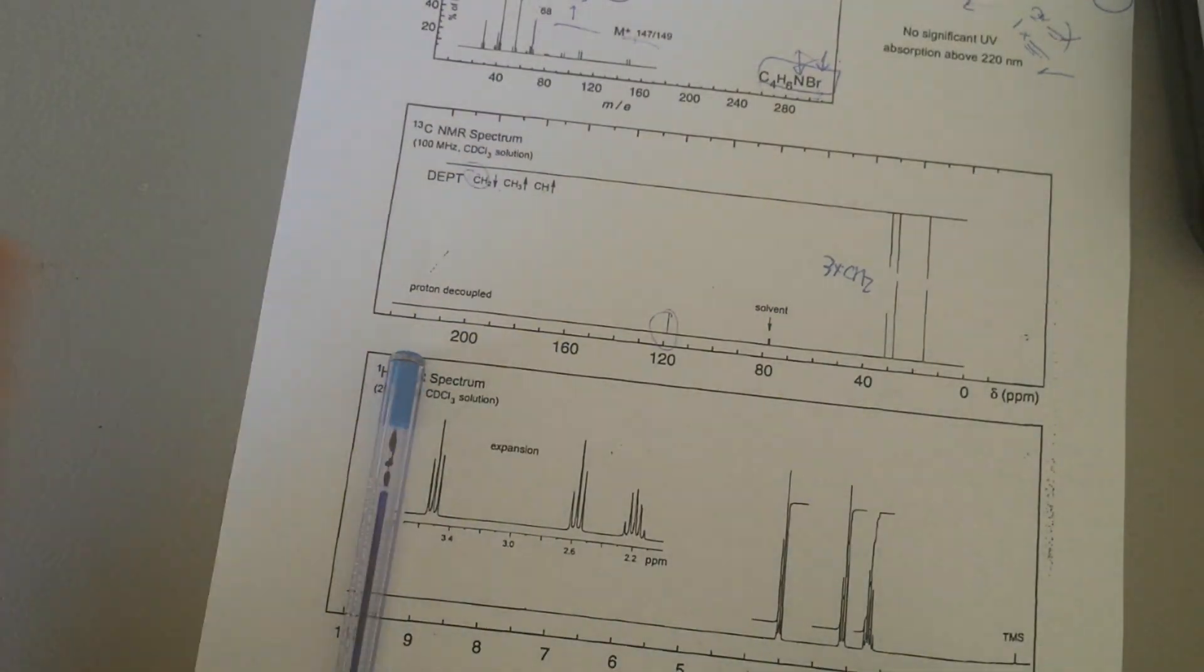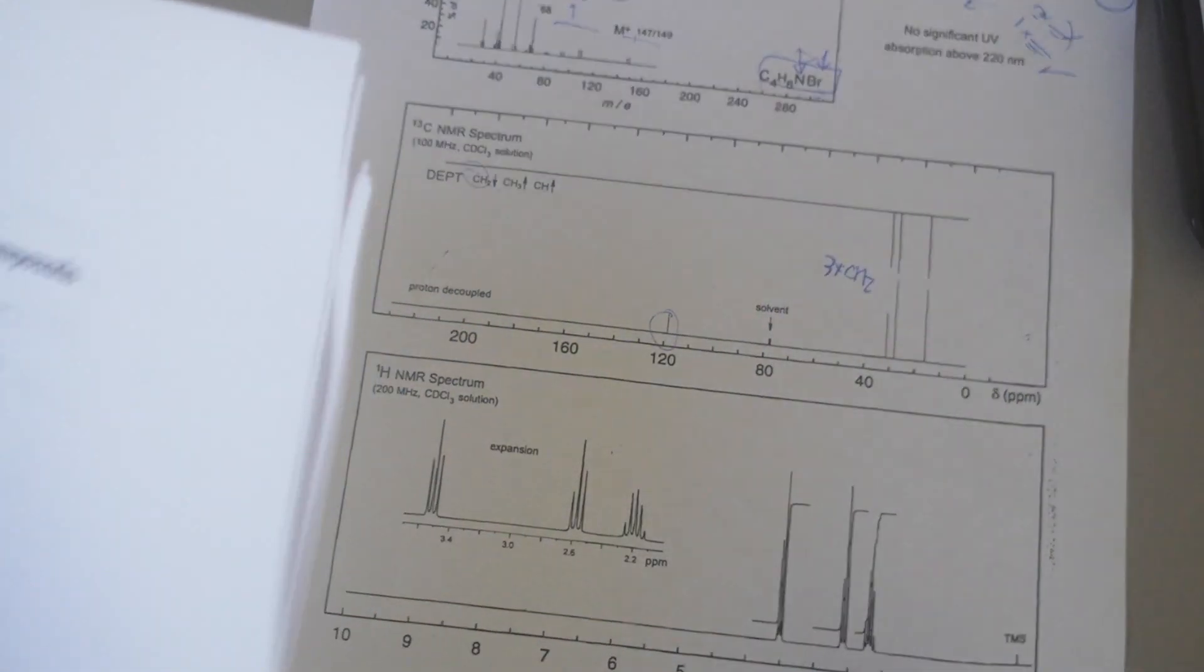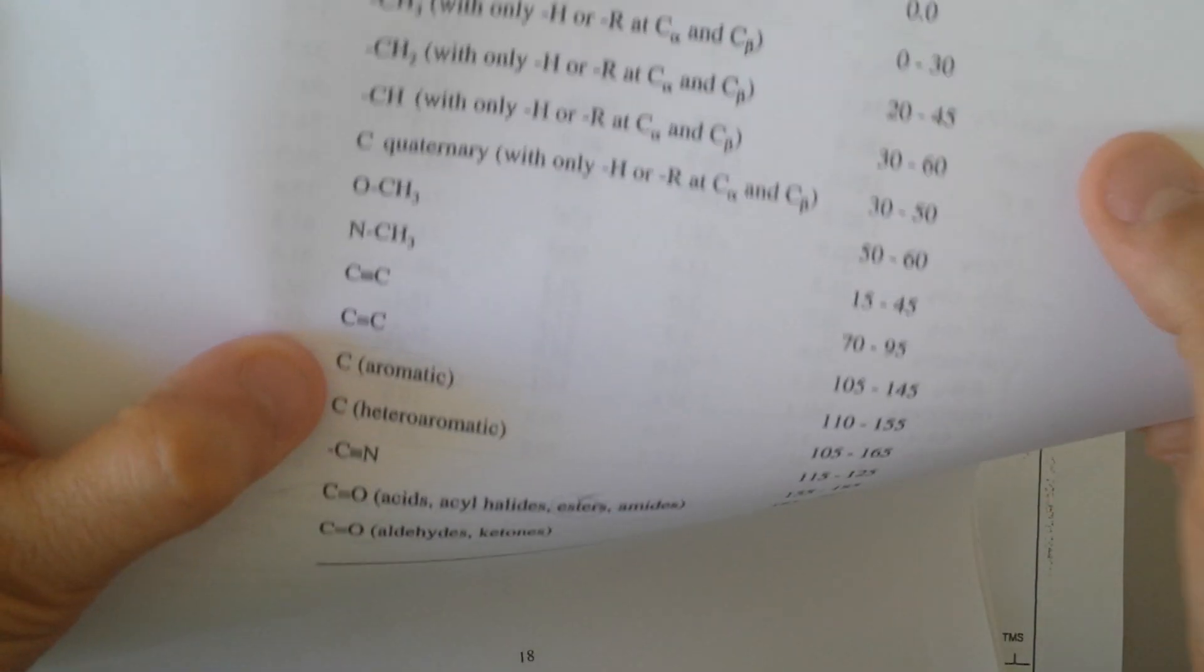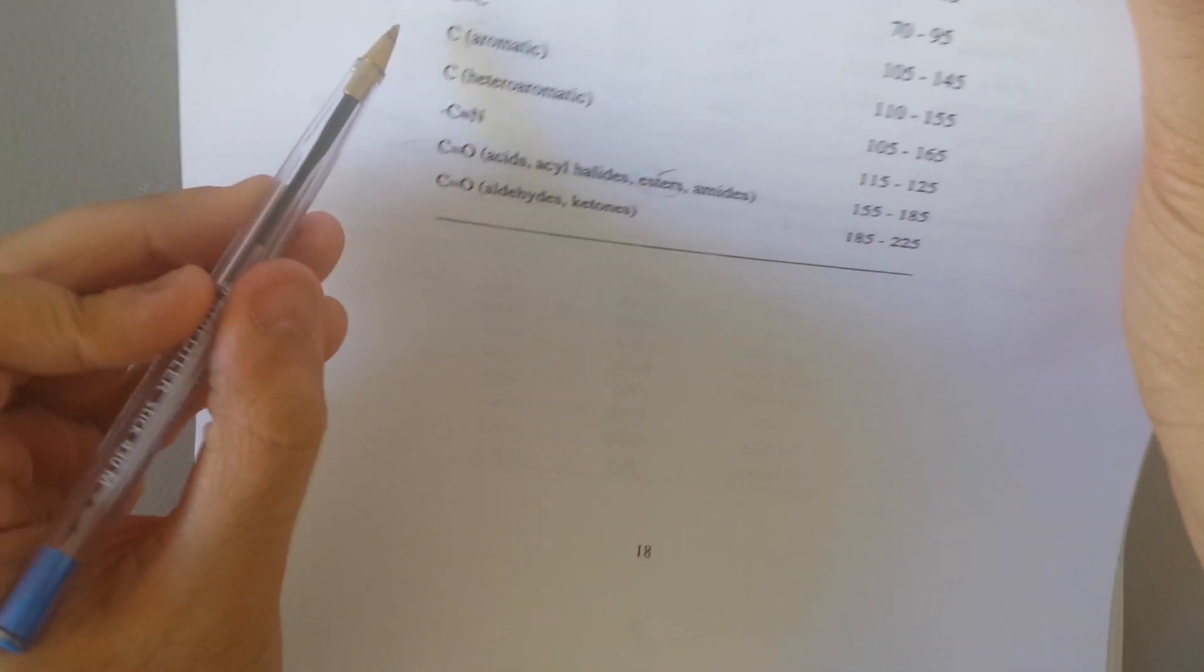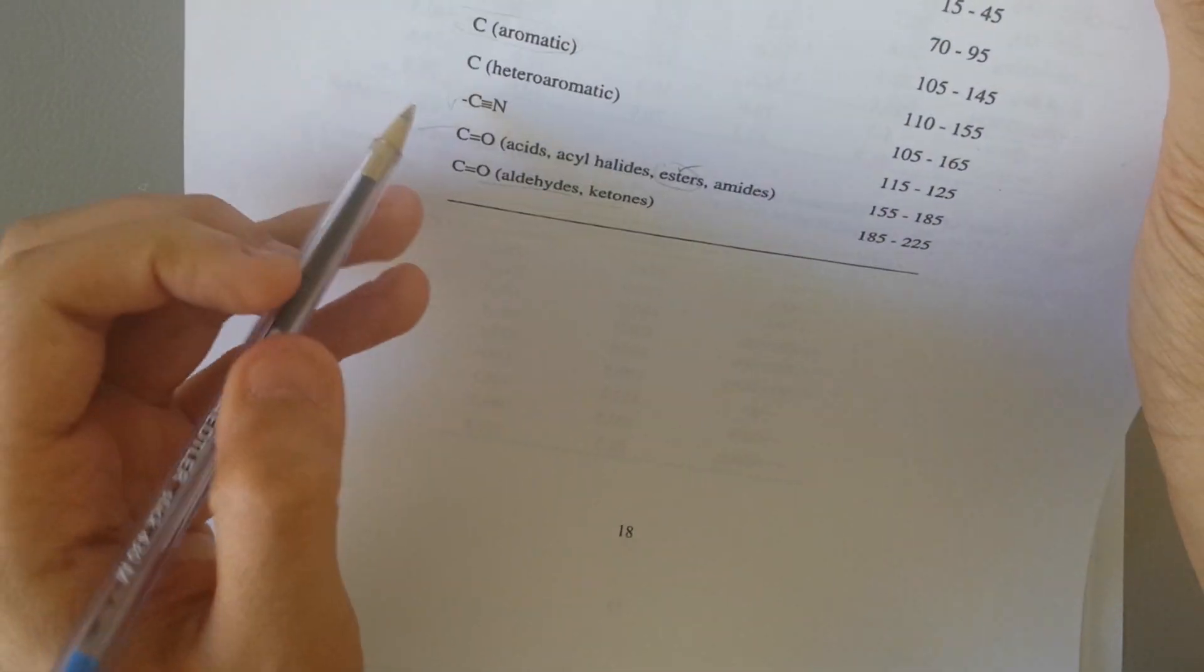And again, for that you will have to refer to the table. So table. Now it's between 120. Where is 120? There you go. It's very easy. CN.